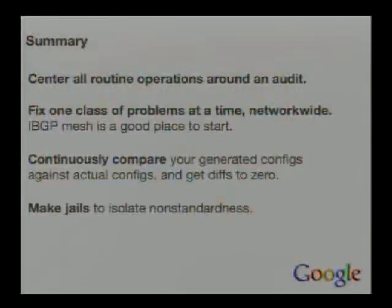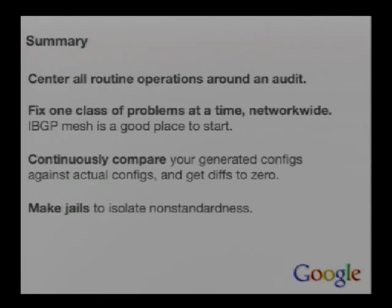The summary is: anything that you do routinely is something that you need to start centering around an audit if you're going to have a higher level of accuracy than you can get by hand. It's up to you whether you want the high level of accuracy. If you're happy with the amount of work you do currently and the level of accuracy you currently get, then there's no need to do this. But I think there's a lot of benefit to doing so, and it's the only way to get beyond the level that you can have by hand. The way to get there from not having it is to start with one class of problems at a time. It seems like IP allocation would be there, but often the problem of needing an IP allocation database is trickier at some places. So IBGP mesh is something that doesn't tie into anything — as long as you have a database of routers, you can pretty much generate that. Almost everyone can start with the IBGP mesh. You want to continuously compare your generated configs against the actual configs and get the diffs down to zero — to the point where everyone is used to seeing it all line up.